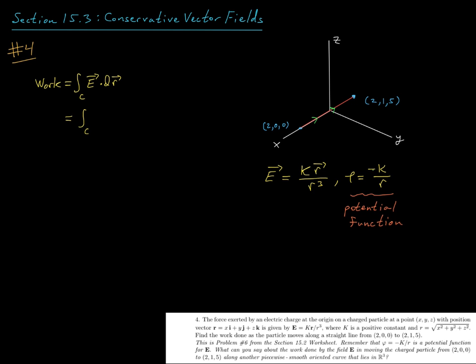So really by the same argument, this function phi, which is minus that constant k divided by this scalar r, this radial distance - if you take this function's gradient you can easily show that it's equal to this vector field E. We did that back in fifteen point one.